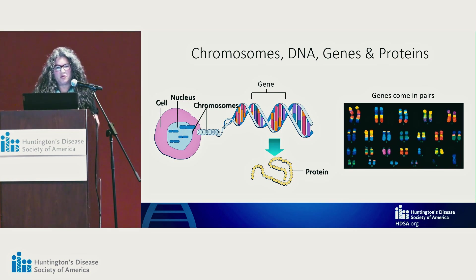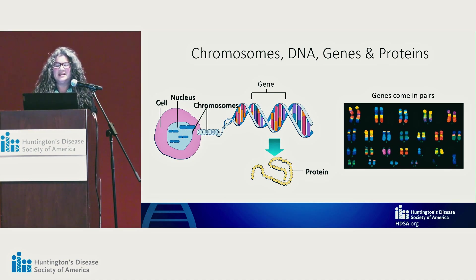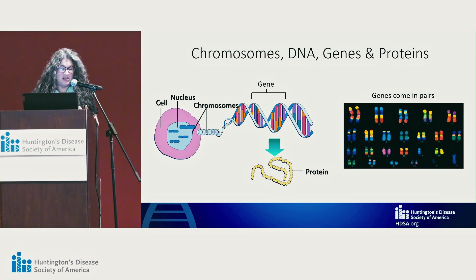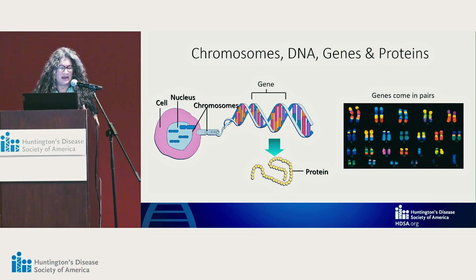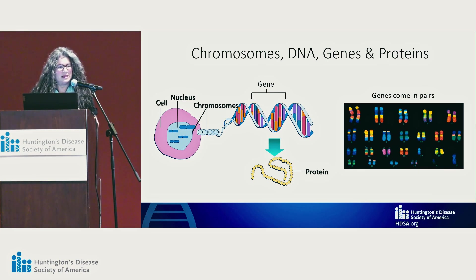If you look at the top of chromosome number four, there are thousands of genes up there. Huntington's disease is one of those conditions where it's dominantly inherited, meaning you only need one abnormal copy of the gene. That gene has a job, just like every gene in our body — some make enzymes that help us digest our food, all kinds of jobs. The protein that gets made in Huntington's disease is called Huntingtin.